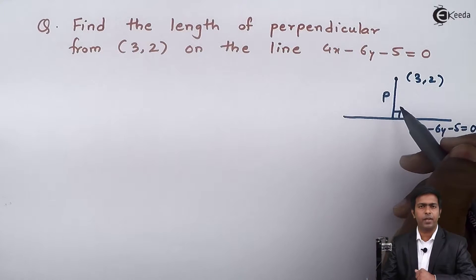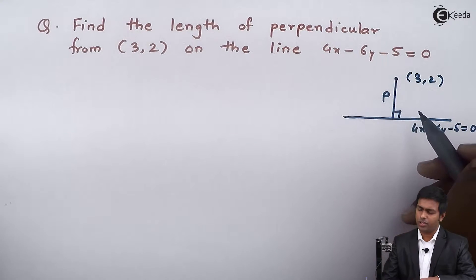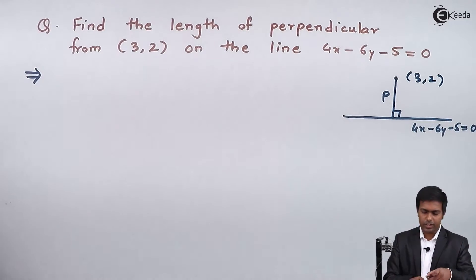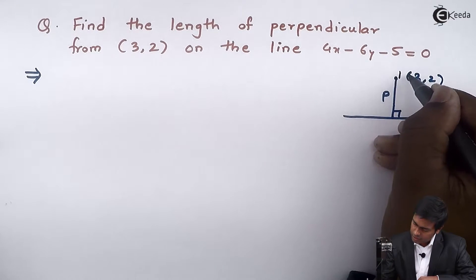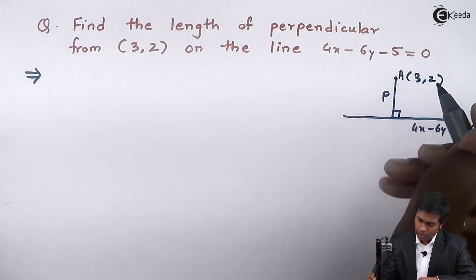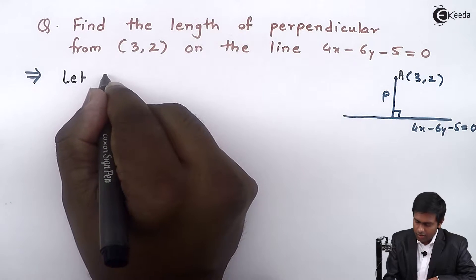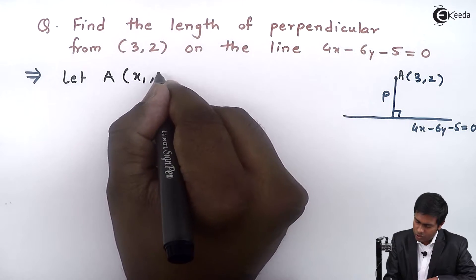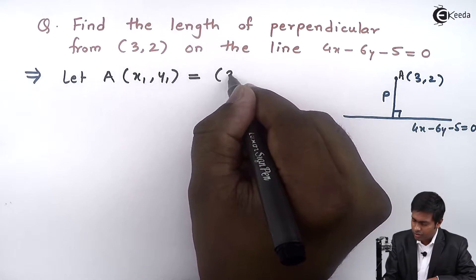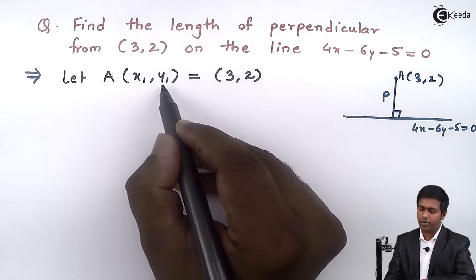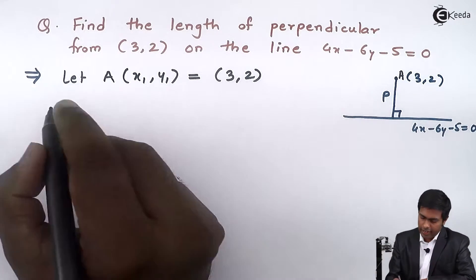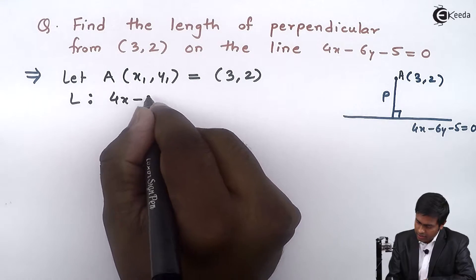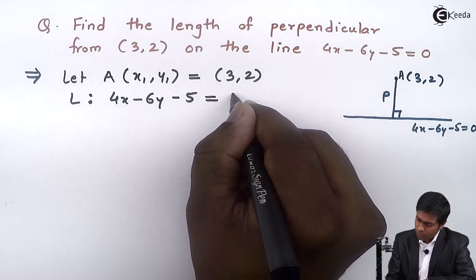To find out the value of p, we have a formula by which we can get the length of perpendicular. Let's assume this point is A. Let point A have coordinates x1 and y1, which is equal to (3, 2). So x1 is 3 and y1 is 2. The given line L is 4x minus 6y minus 5 equal to 0.